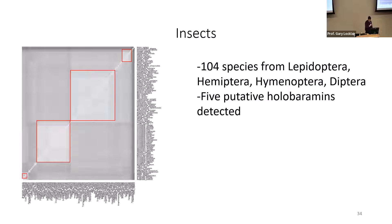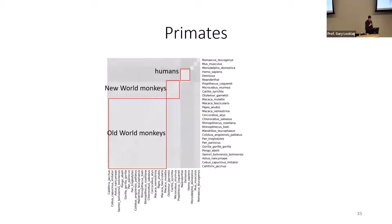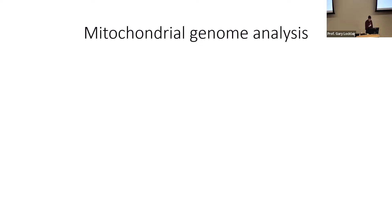In insects, 100 species were studied and five groups were found: Lepidoptera (butterflies), Hemiptera (bugs), Hymenoptera (ants and bees), and two Diptera (flies). In primates, three groups were identified: humans, New World monkeys, and Old World monkeys. Outlier species like Monodelphis (a possum mouse) were added to demonstrate true differences as reference comparisons.